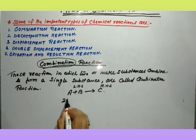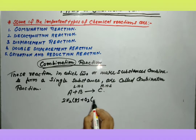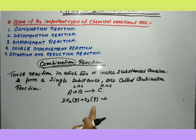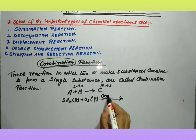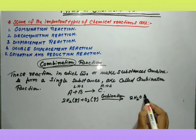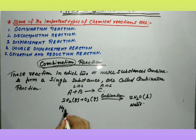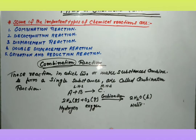Next example: hydrogen burns in oxygen to form water. यहाँ पर जो reactants हैं — hydrogen and oxygen — दोनों gaseous state में हैं। अब यह दोनों जब एक दूसरे से react कर रहे हैं तो 2H₂O form हो रहा है, liquid state में — this is water। दो reactants हैं, but एक product form हो रहा है — इसे हम लोग combination reaction कहेंगे।